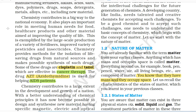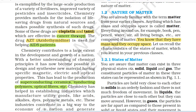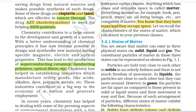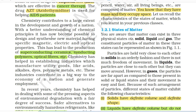Chemistry contributes in a big way to the national economy. It also plays an important role in meeting human needs for food, healthcare products and other materials aimed at improving the quality of life. This is exemplified by the large-scale production of a variety of fertilizers, improved variety of pesticides and insecticides. Chemistry provides methods for the isolation of life-saving drugs from natural sources and makes possible synthesis of such drugs. Some of these drugs are cisplatin and taxol which are effective in cancer therapy. The drug AZT, i.e. azidothymidine, is used for helping AIDS patients.